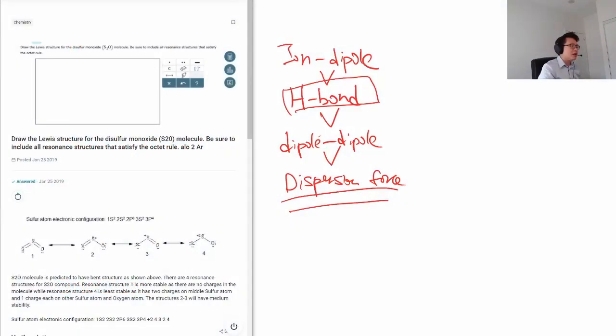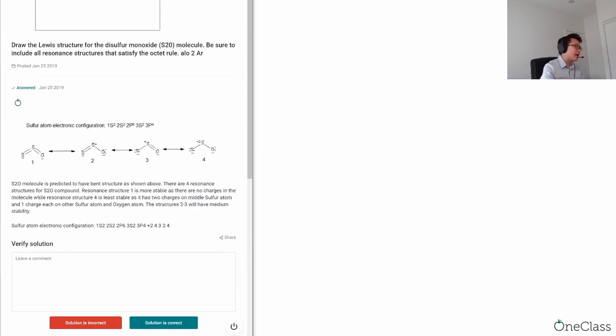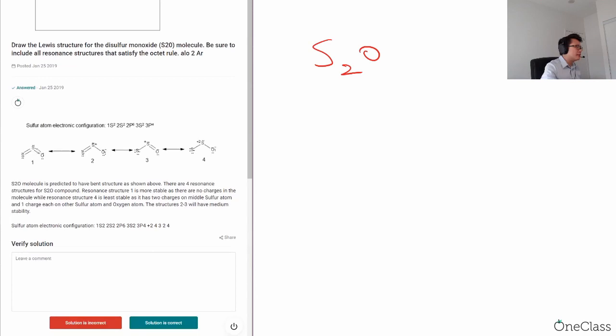We'll have to draw the Lewis structure of the disulfur monoxide and then be sure to include all the resonance structures to satisfy the octet rule. We have a disulfur monoxide S2O. So we are going to draw out the Lewis structure and then from the Lewis structure, we should be able to figure out the resonance structure.